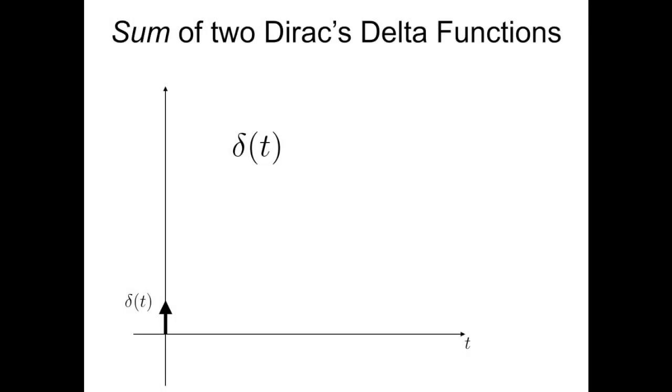Let me go back to the concept of the Dirac delta function. Here's the plot again of δ(t). As you'll remember, this function is zero everywhere, except at t equals zero where it takes an infinite value, indicated graphically by this arrow.